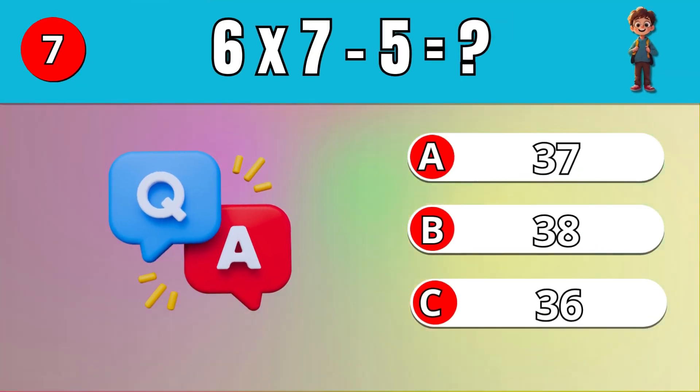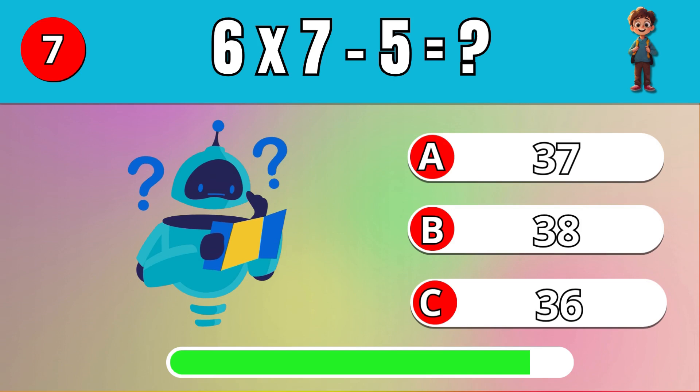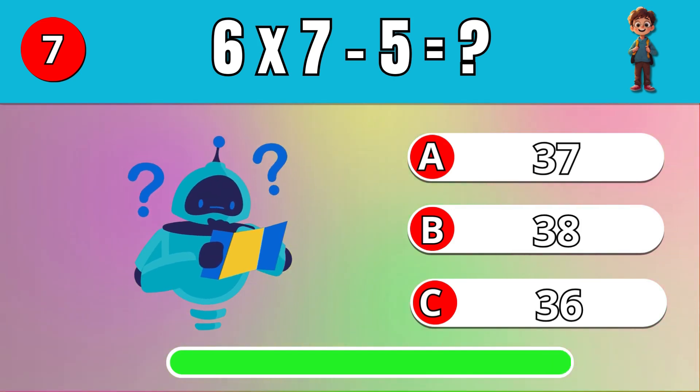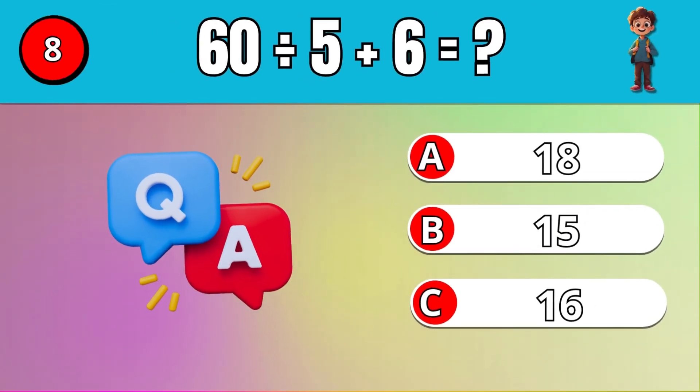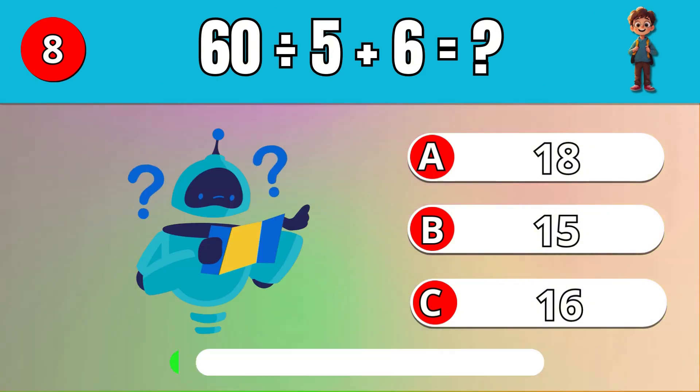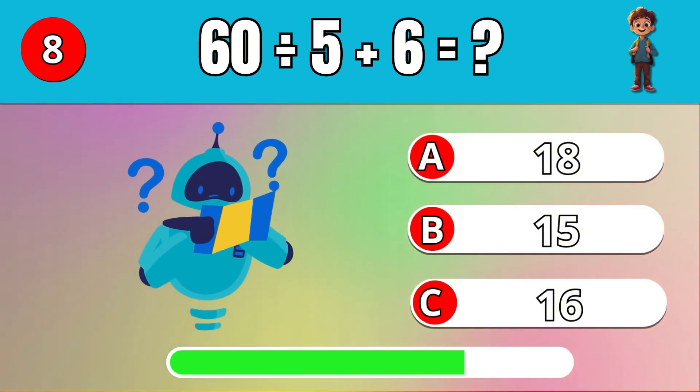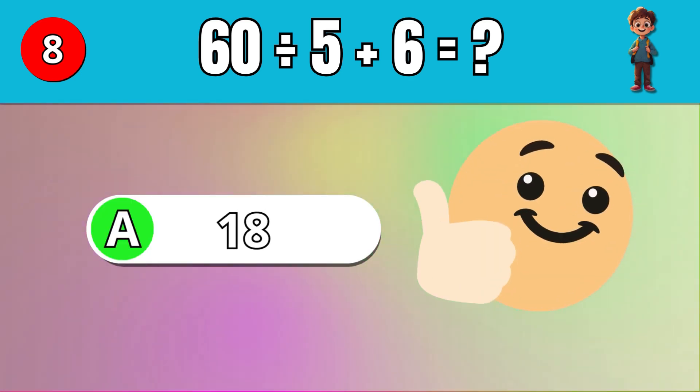What is 6 times 7 minus 5? A, 37. What is 60 divided by 5 plus 6? A, 18.